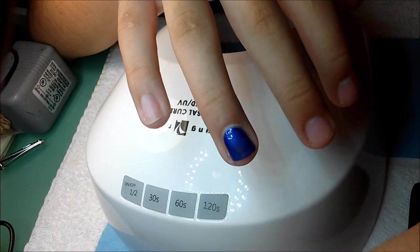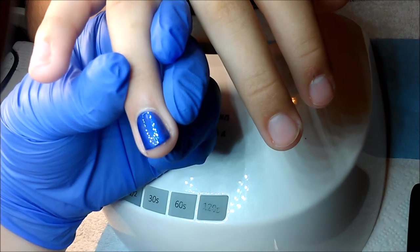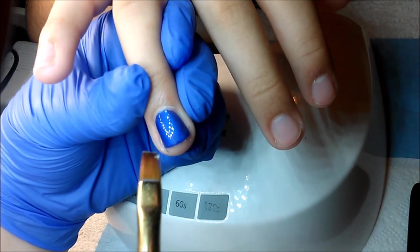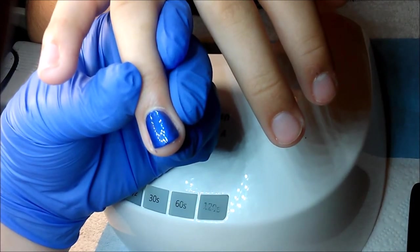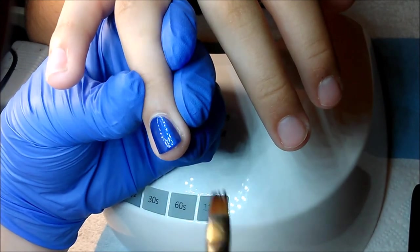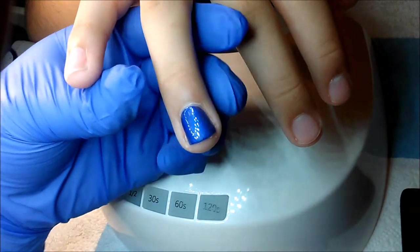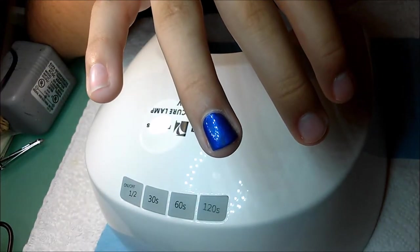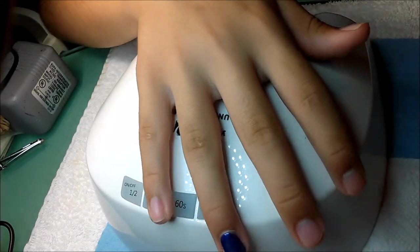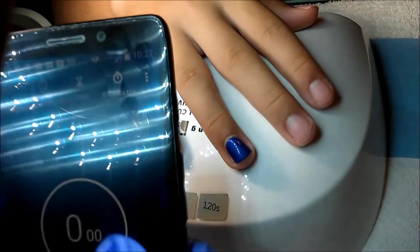Okay, now that you've applied your color, you want to make sure to use a cleanup brush and clean up any polish that you happen to get on the skin or anything. Or if your cuticle area application wasn't perfect, you can just go back in with that brush and clean up around there. And once you've done that, you want to set your timer for four minutes.